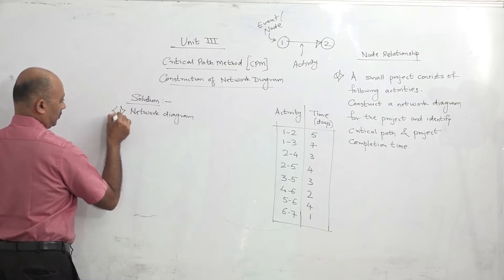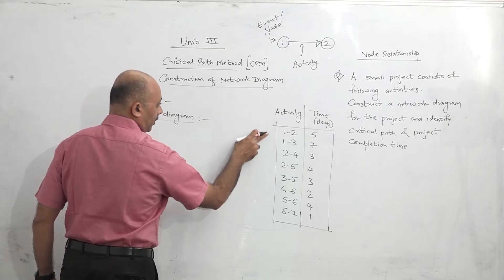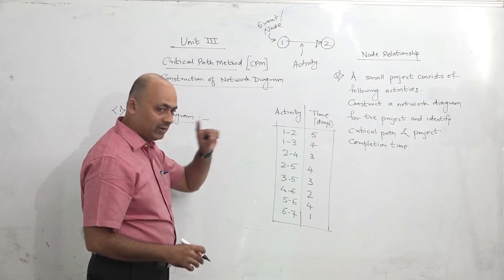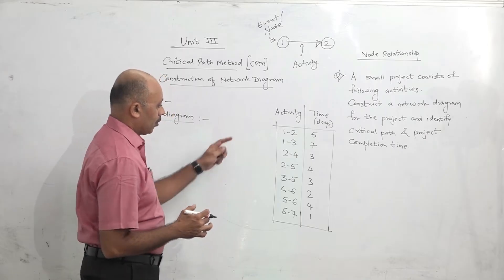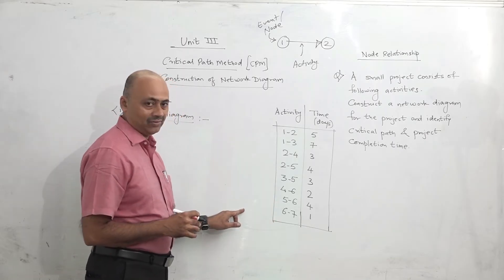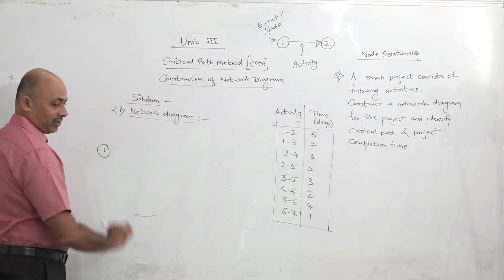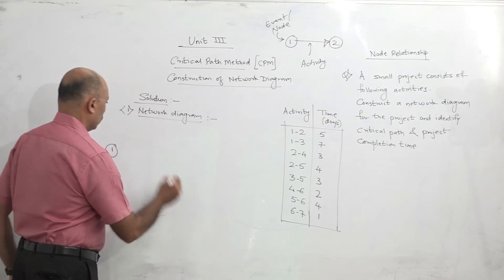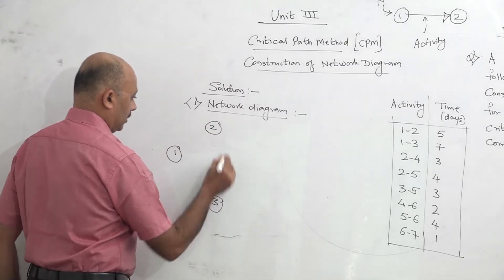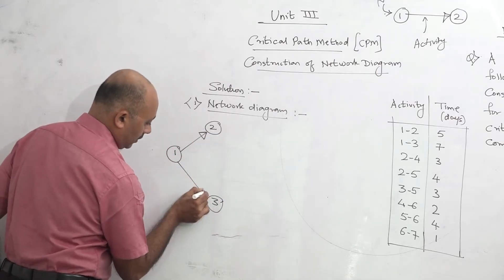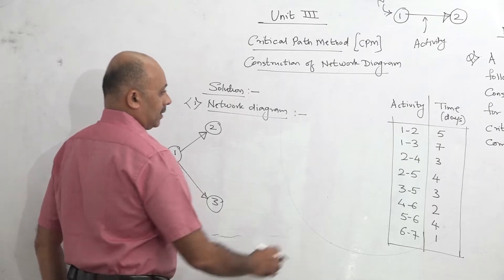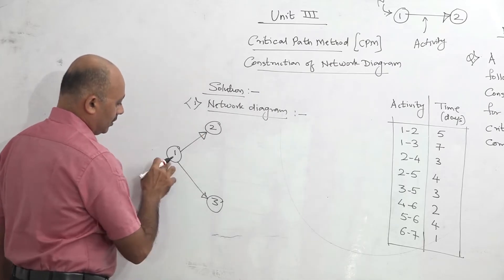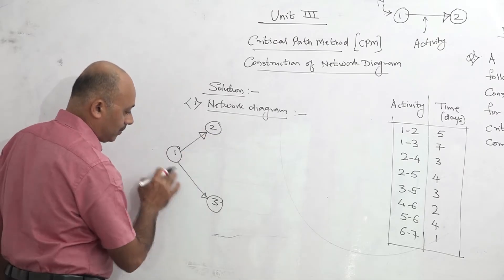The first step is construction of the network diagram. The first activity is 1-2, and the second is 1-3. It means from event number 1 — event number 1 represents the start of the project. The project consists of 8 activities. From event number 1, there are 2 activities starting: 1-2 and 1-3. So this is event number 2 and this is event number 3. This is activity 1-2 and this is activity 1-3. These 2 activities are starting simultaneously.